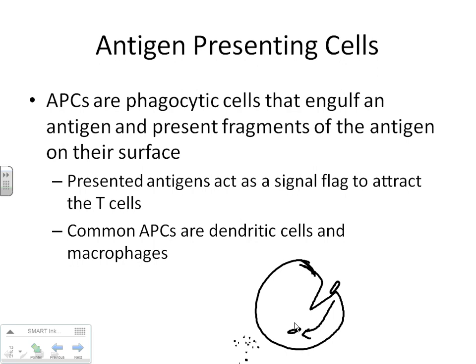The macrophage takes one little piece of the bacteria and sticks it out on a protein on its surface. This phagocytic cell is taking the antigen and presenting it to the T cells and B cells — saying, 'Here it is, I need you to work on this for me. This is what I found, it's bad, and we need to work together to kill it.'